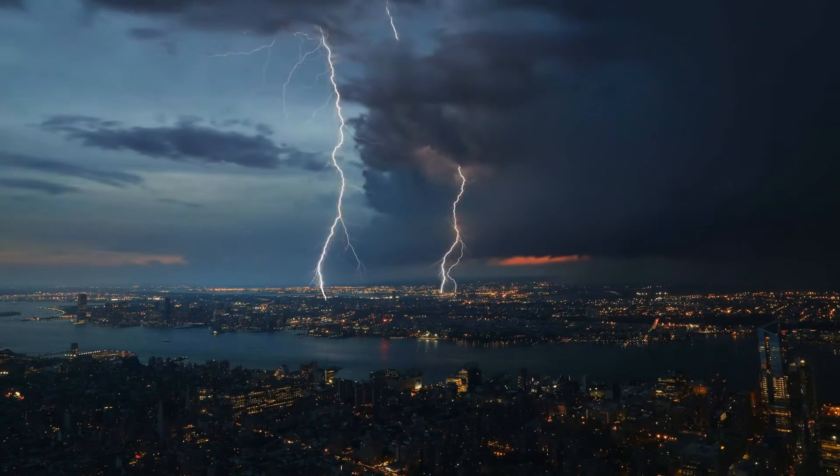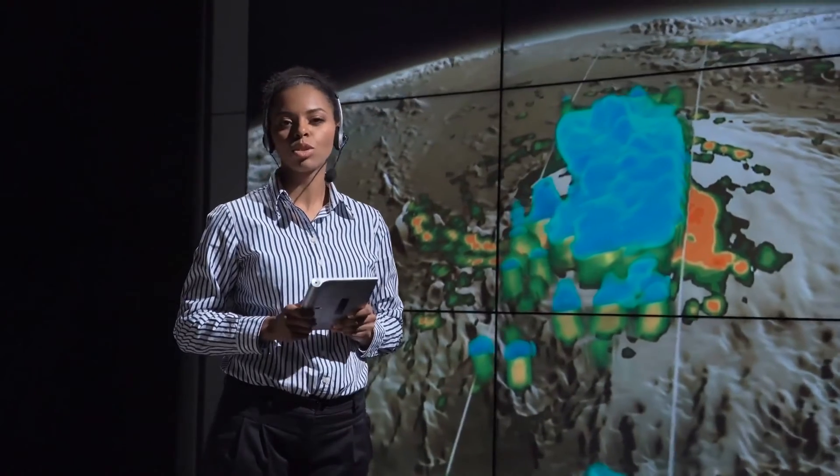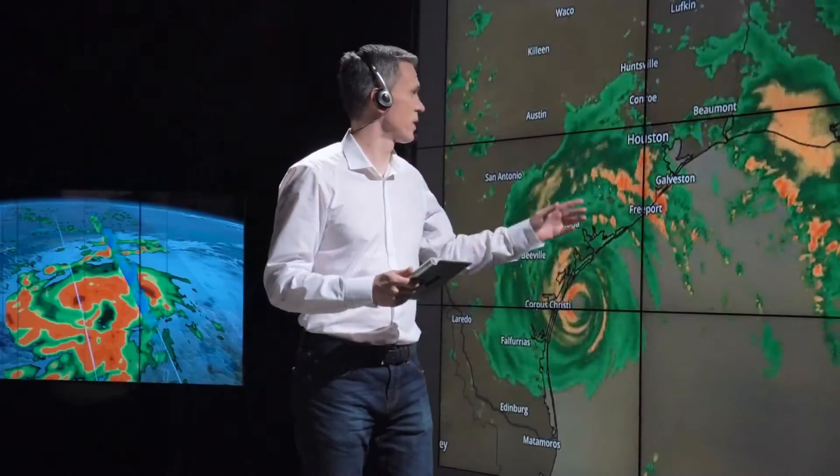The National Weather Service produces weather maps from information gathered from about a thousand weather stations. On these maps, each station is represented by a station model. Let's go over some of the things a station model gives you.